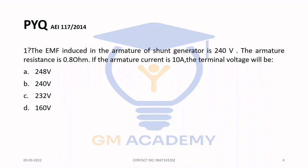The EMF induced in the armature of a shunt generator is 240 volt. The armature resistance is 0.8 ohm. If the armature current is 10A, the terminal voltage will be?